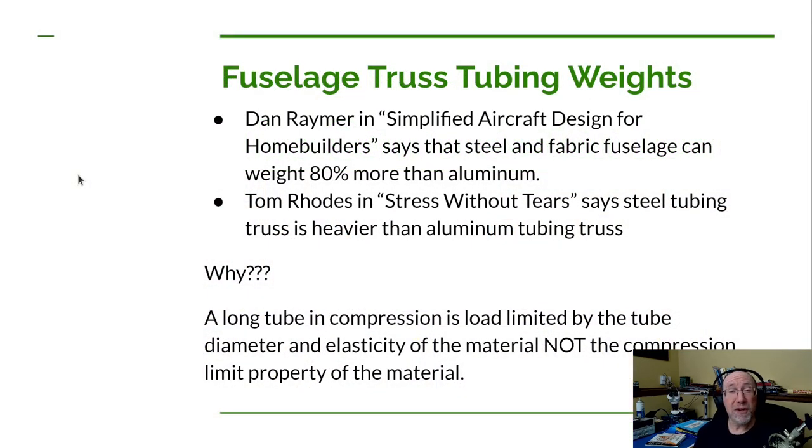While I was working on one of the videos on the UWS4 structural design, using Dan Raymer's book like we've been doing all along, in chapter 7 of Dan's book, he mentions that a steel truss fuselage can weigh about 80% more than a very similar equivalent aluminum truss fuselage. Another book that Dan mentions, by Tom Rhodes, called Stress Without Tears, Tom also mentions basically the same thing.